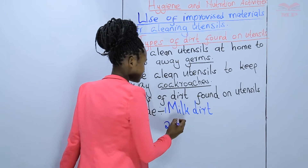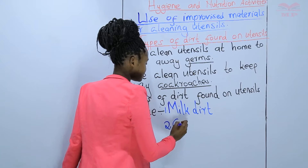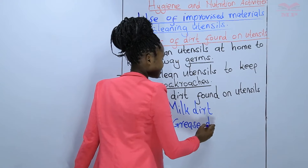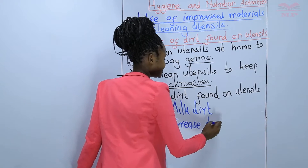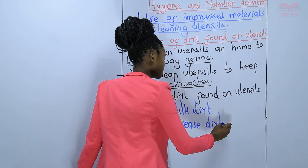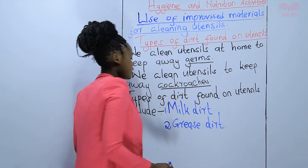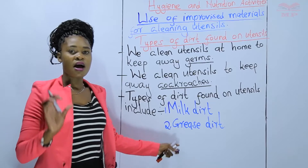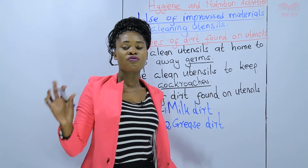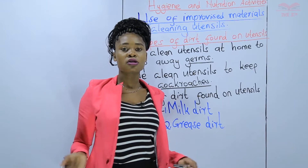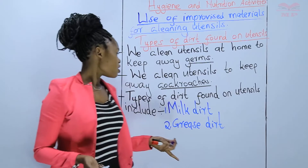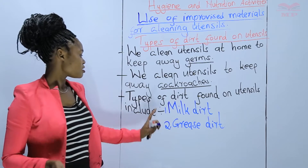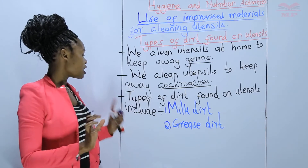Then we have another one — we call it grease dirt. Grease dirt includes dirt that has come from oily foods like meat, fish, or eggs. So, grease dirt looks oily.